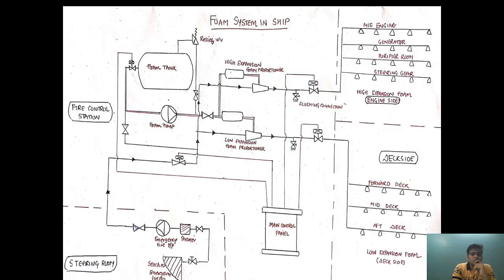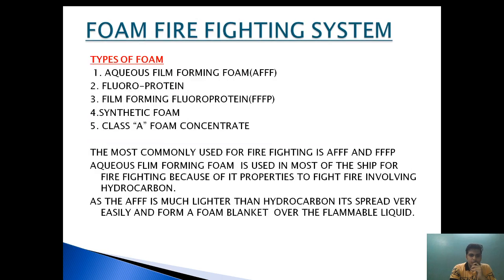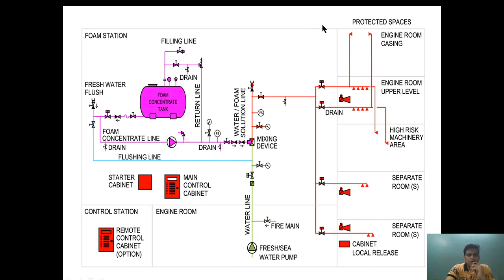One more thing: as you can see here, a drain or sampling point is provided in the foam tank from where a sample is taken every five years to monitor the condition of the foam and whether it needs to be replenished or whether the protein content of the foam has been affected by the external environment. A filling line is also provided so that if after a period of time the foam concentrate tank is found to be in poor condition, the foam can be replaced through the filling line.